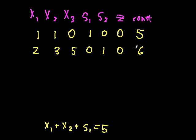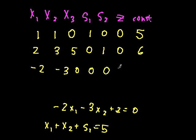Lastly, the objective function always goes on the last row. So from before we had negative 2 x sub 1 minus 3 x sub 2 plus z equals 0. So you'd put down negative 2, negative 3, 0, 0, 0, 1 z, and a constant of 0.